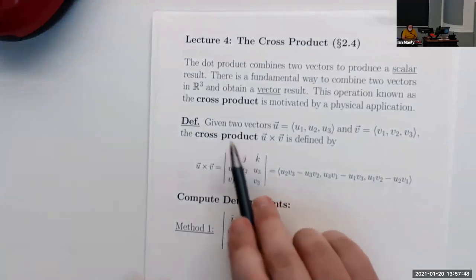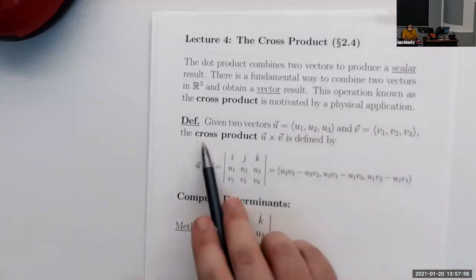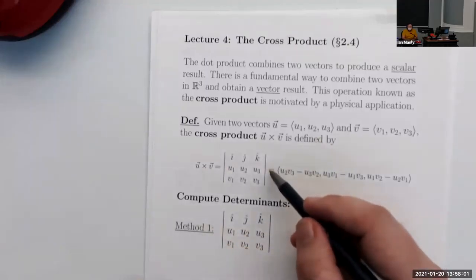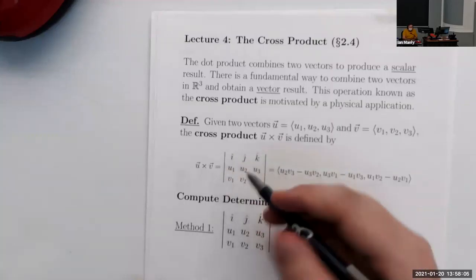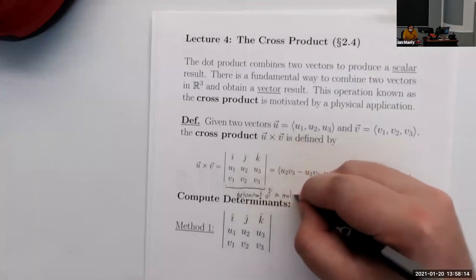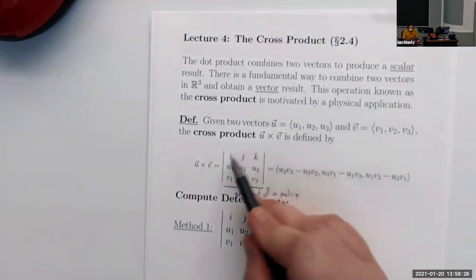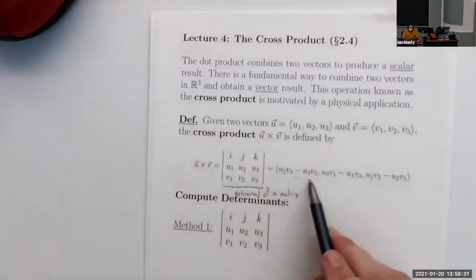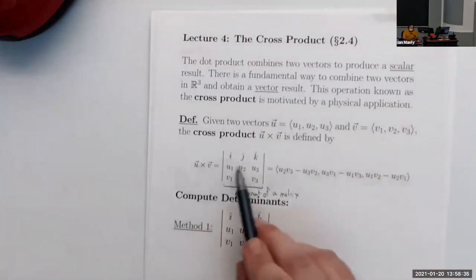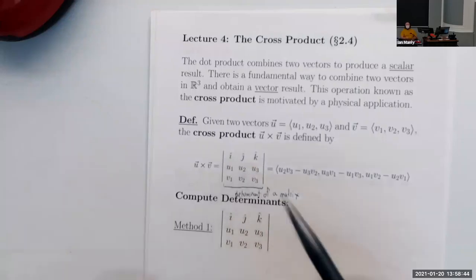Here's what the cross product is. Given two vectors u and v with these components, the cross product is defined using the determinant of a matrix. For those who haven't seen a determinant before, it's a specific quantity we extract from a matrix — in this case a three-by-three grid. We put i, j, and k in the top row, the components of u in the middle row, and the components of v in the bottom row.